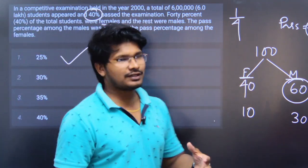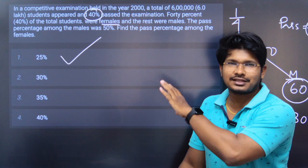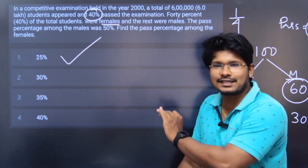So your answer is 25%. Without using the 6 lakh figure, just using percentage calculations, you can solve it quickly.